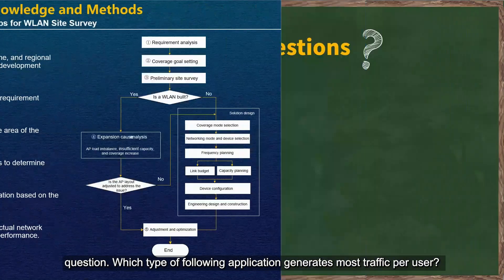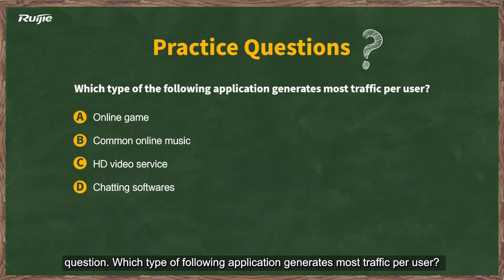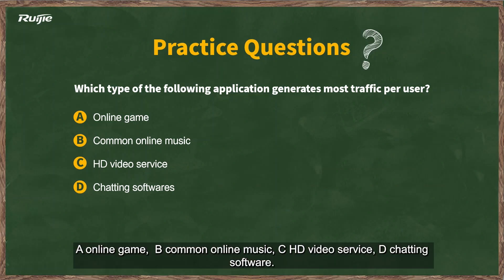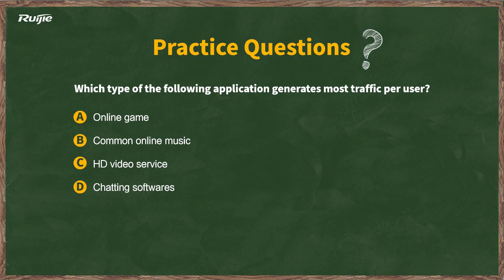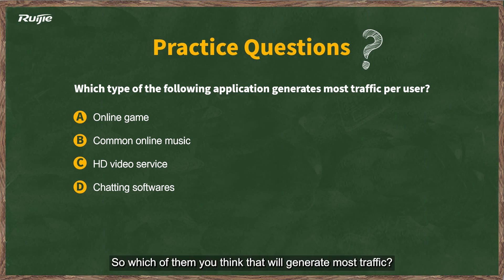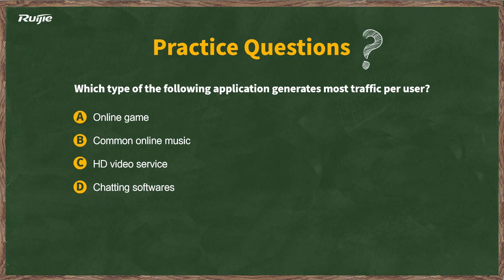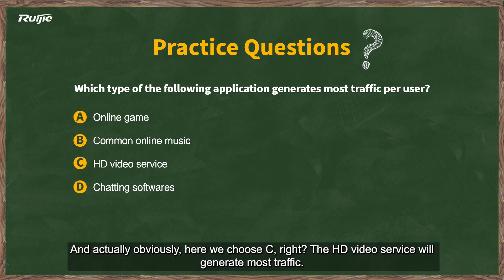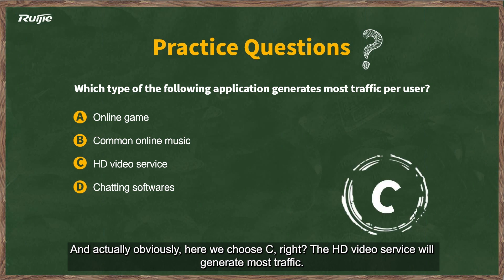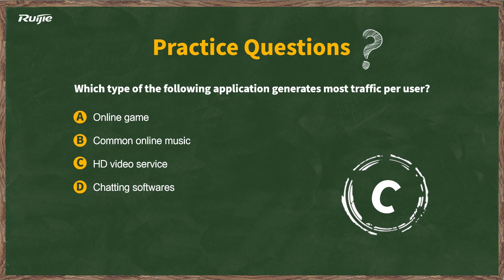Let's look at a review question: Which type of application generates the most traffic per user? A: online game, B: common online music, C: HD video service, D: chatting software. The answer is C — HD video service will generate the most traffic per user. That's all for this part.